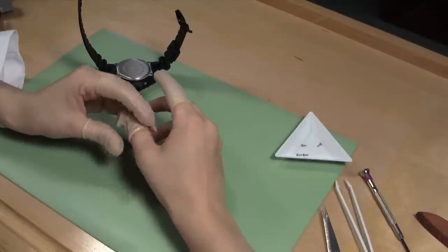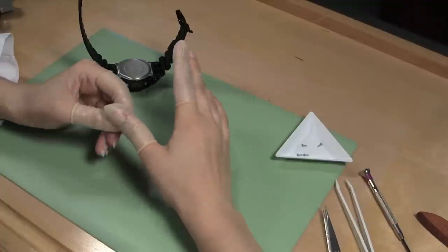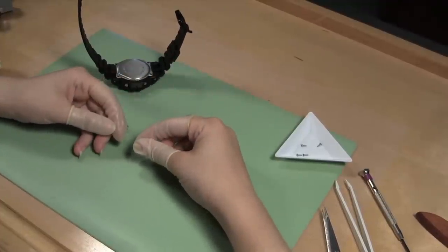Put plastic finger cots on your fingers that may touch the watch movement. Dirt, oils, and grease on your fingers can damage the inner workings of the watch, and the cot will keep that oil from transferring to the watch.